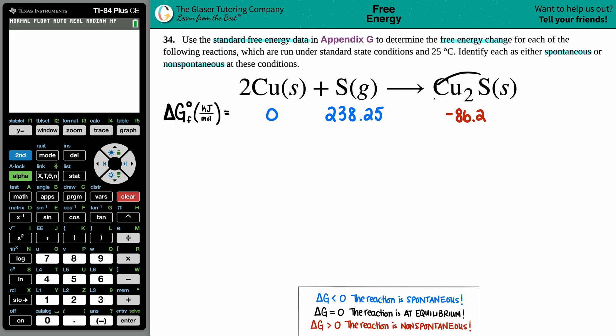We need to find that free energy change. Keep in mind that a change is always a delta, products minus reactants, final minus initial. Since we're trying to solve for free energy, the more specific name for free energy is Gibbs free energy, G for Gibbs, so we're solving for a delta G value.